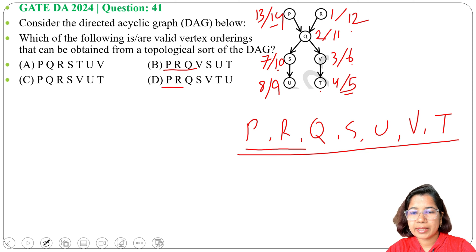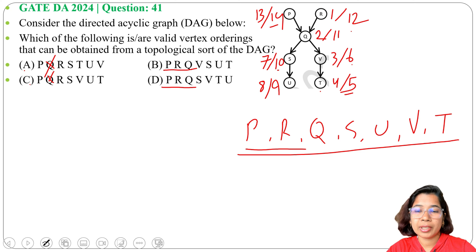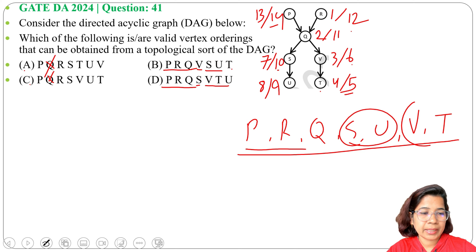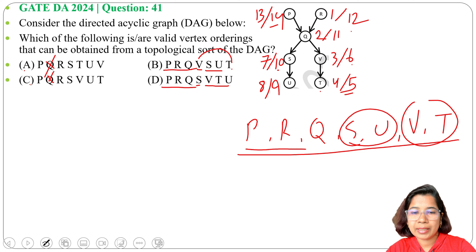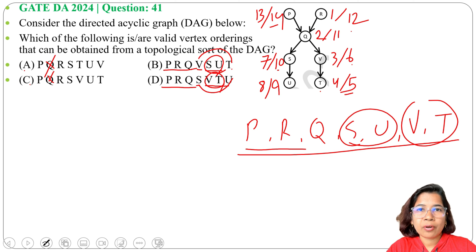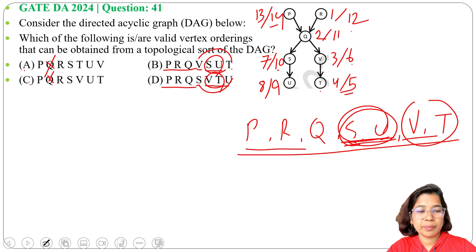Checking against options: P R Q is present in both B and D, so options A and C are eliminated. For option B, the sequence after Q is S U T, but we got S U V T. For option D, it has S U then V T. However, by DFS we get the sequence S U V T, and the options are not in that exact sequence. So by DFS we cannot directly confirm option B or D.